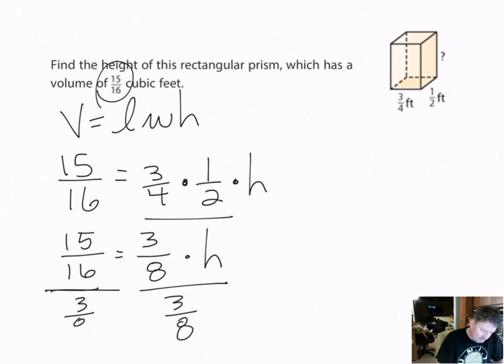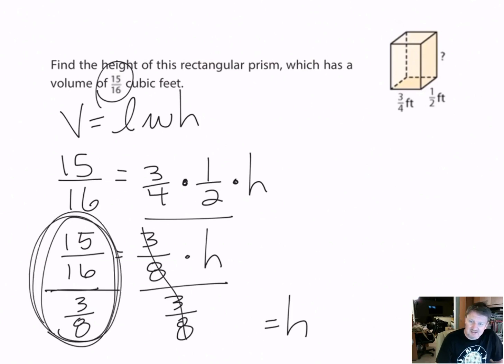If I divide both sides by 3/8, this 3/8 and this 3/8 basically cancels, leaving me with just h. So I've got to solve this part of the equation: 15/16 divided by 3/8.